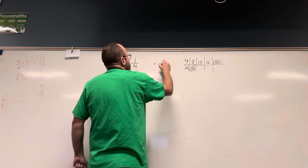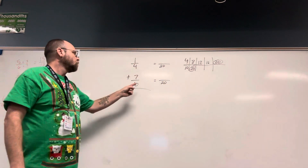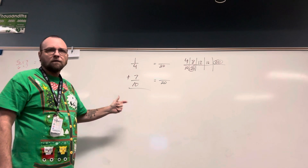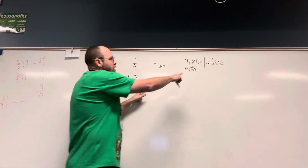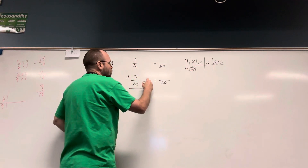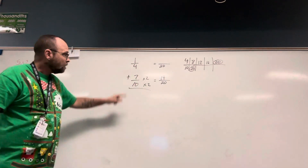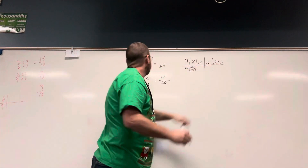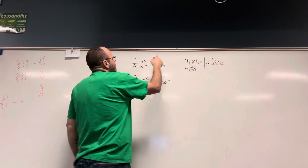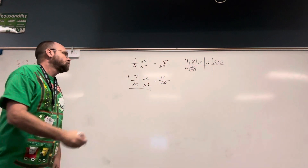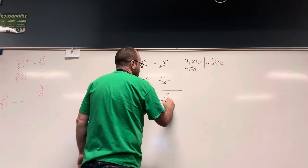I want to change these so they're both over 20. I can't change the value, so I have to multiply my numerator and denominator by the same thing — each fraction will have a different multiplier. 10 times 2 gives me 20, so I multiply both by 2, and 7 times 2 is 14. 4 times 5 gave me 20, so I multiply both numerator and denominator by 5, and 1 times 5 is 5. Five twentieths plus 14 twentieths is 19 twentieths.